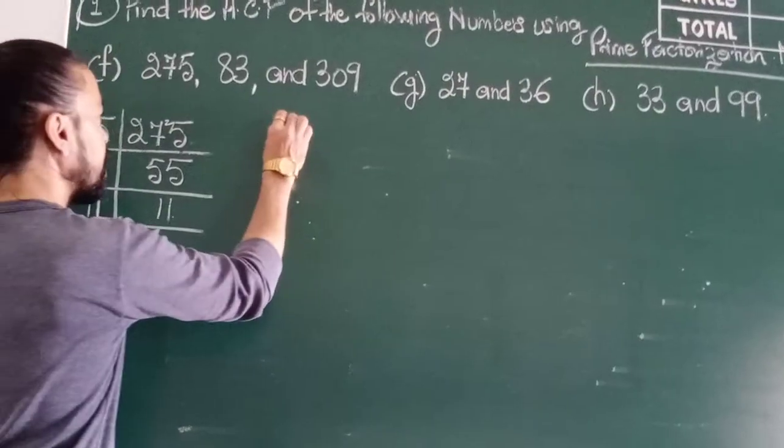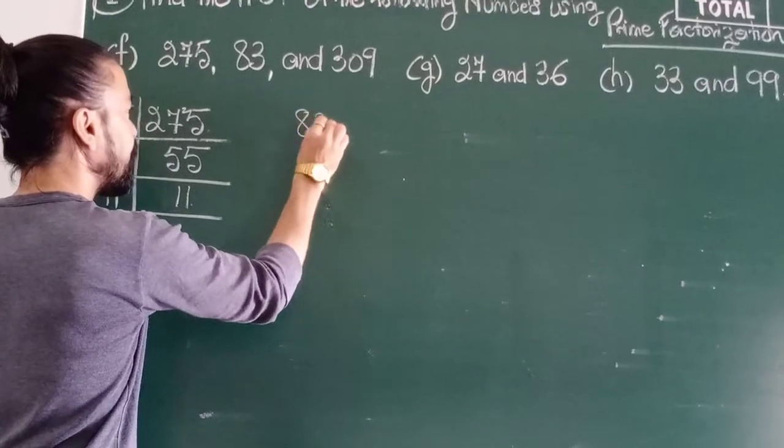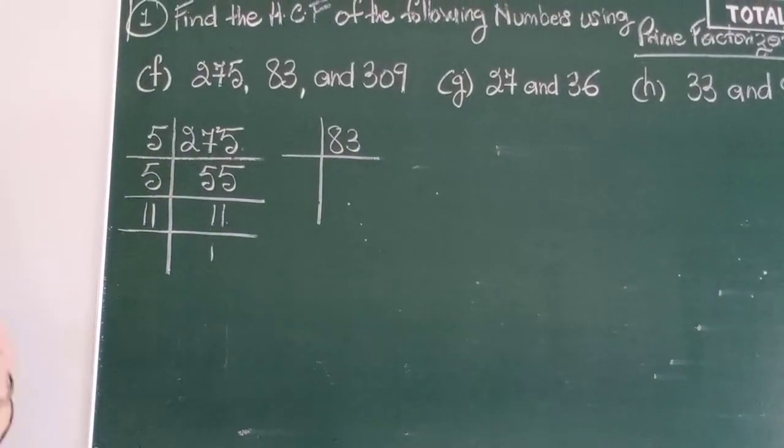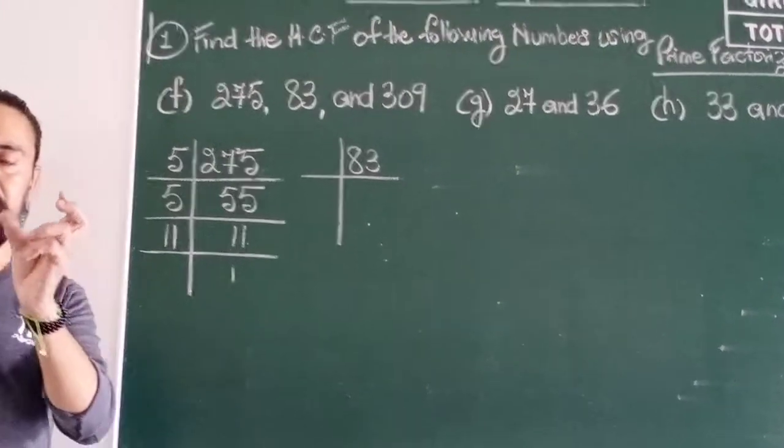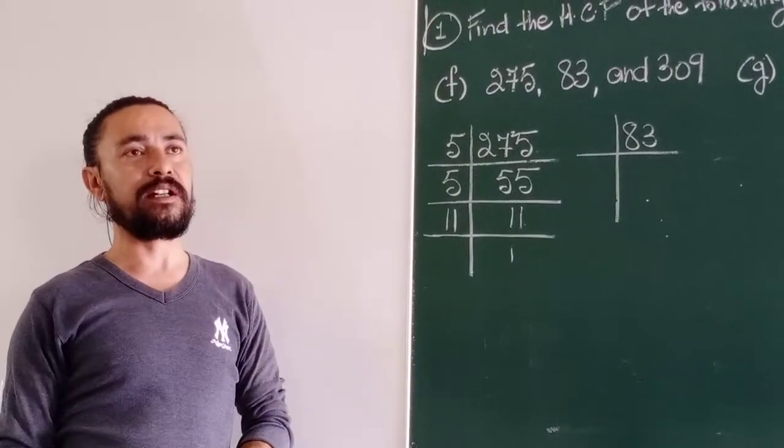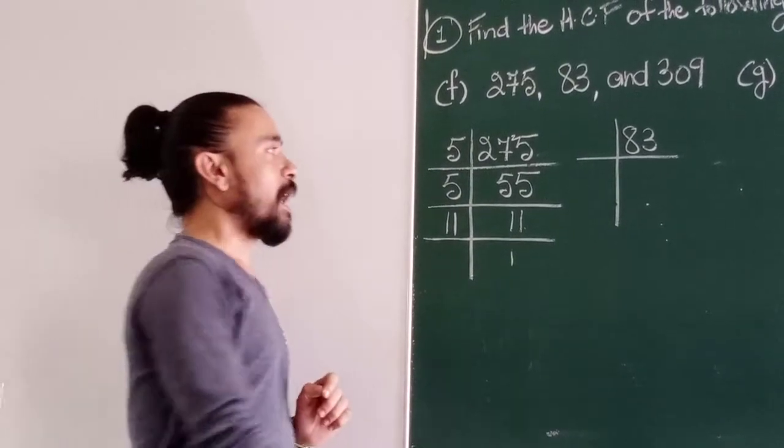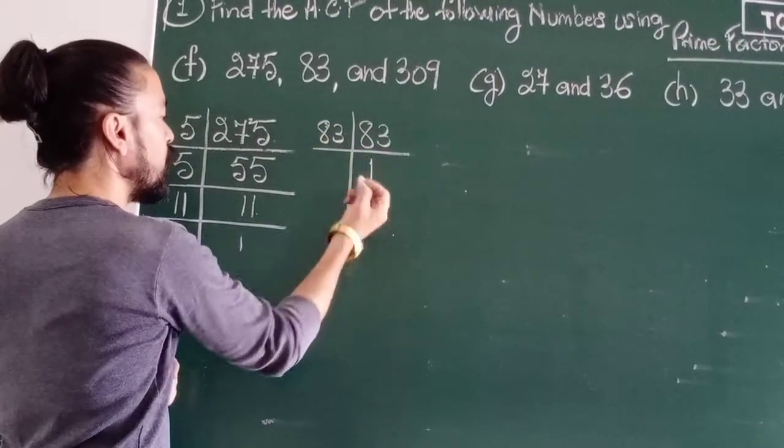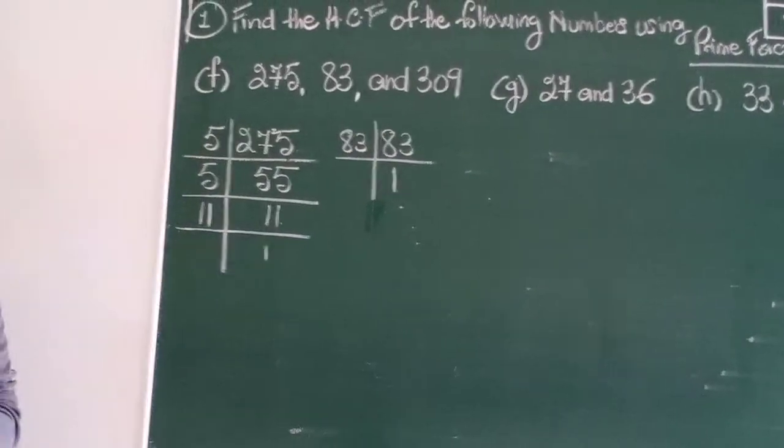Let's take the next number that is 83. Now as you know, and that is what I have told you, by a particular method and format to find out all the prime numbers between 1 and 100. And 83 happens to be a prime number, so 83 will be divisible only by 83 and no other number.